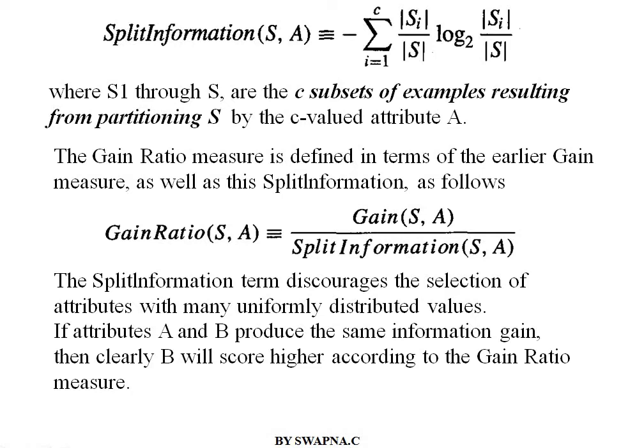This split information term discourages the selection of attributes with many uniformly distributed values. If attributes A and B produce the same information gain, then clearly one will score higher according to the gain ratio measure. If any two attributes are producing the same information gain, we will get a higher gain ratio for the one that splits more cleanly.